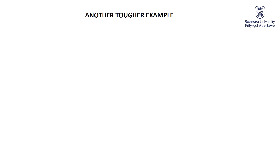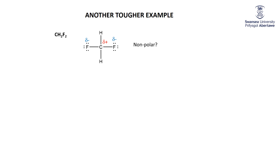Let's apply that to a trickier example that's very easy to get wrong: CH₂F₂. If you draw this as a Lewis structure and you're not thinking straight, you might say the carbon is slightly positive, the fluorines are slightly negative — fluorine being the most electronegative atom — and conclude the center of both the positive and negative charge is the carbon, so it's not polar. Not so fast!